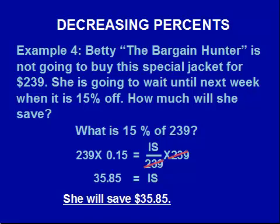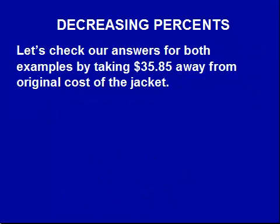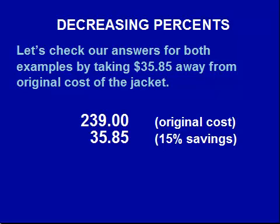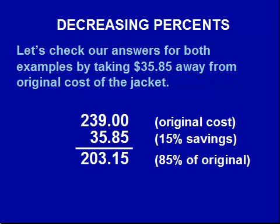How can we use this number to get our answer from example three? We take the original cost of the jacket, $239, and subtract the 15% savings of $35.85, and we come up with $203.15 — which was our answer for example three.